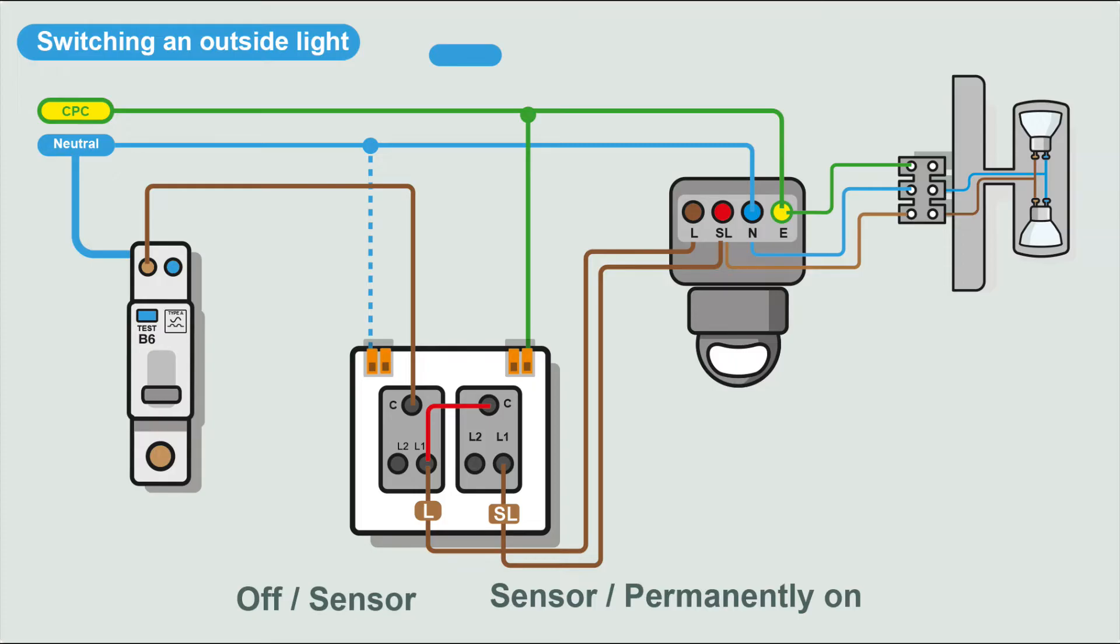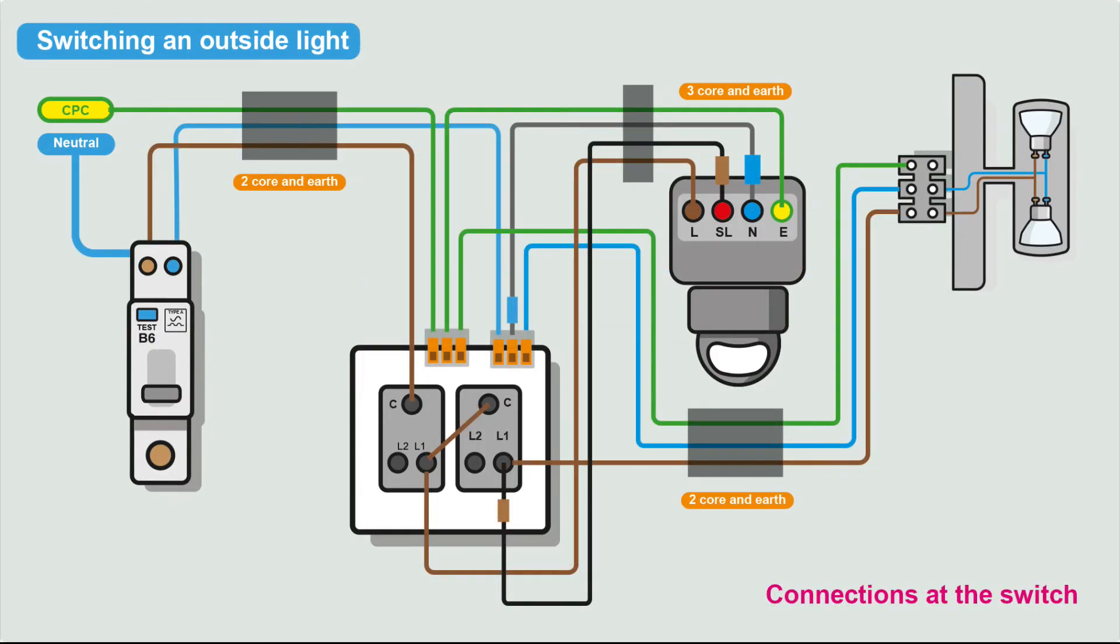There's several different ways of wiring, and let's have a look at another way. This one's very similar as well, but we've looped everything through the switch this time. But it's the same principle. You can follow the flow of power around to how you get it all off, how you get it on sensor, and how you get it permanently on.